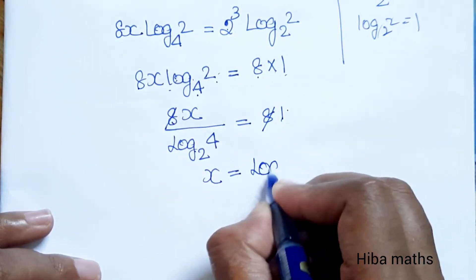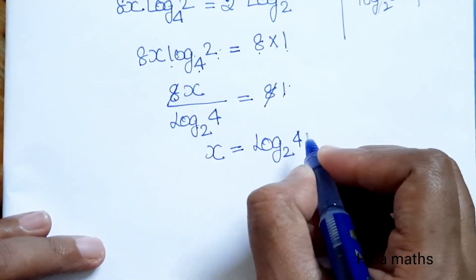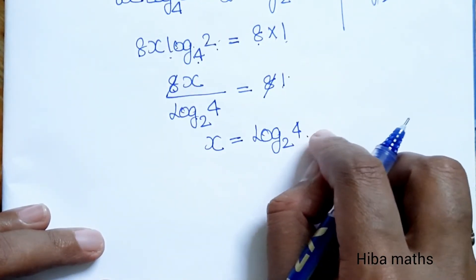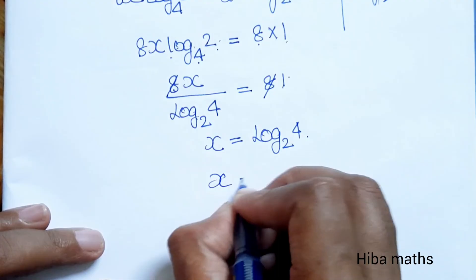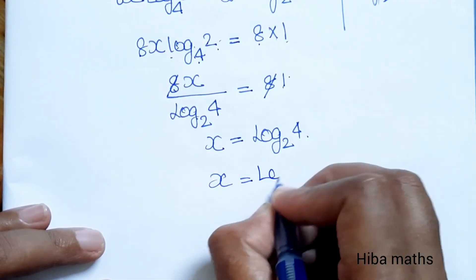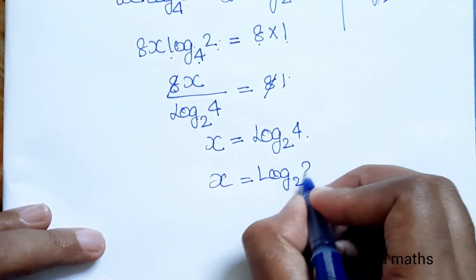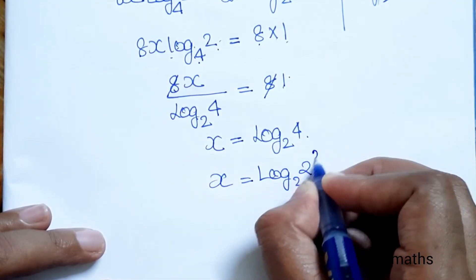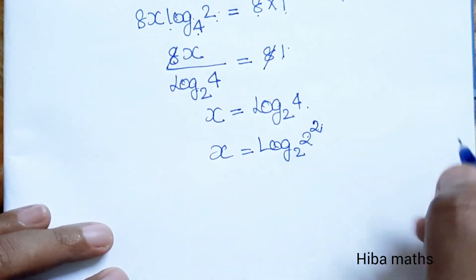So log base 2 of 4 is equal to 2. Next line, x is equal to log base 2 of 4, which is equal to 2 squared, so 2 power 2.